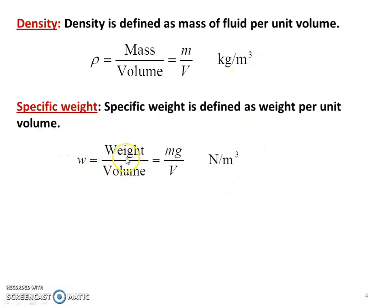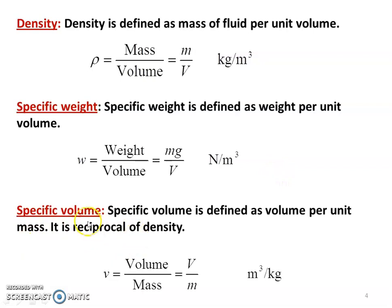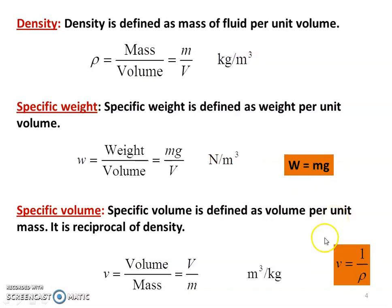Specific weight W is weight divided by volume. Weight equals M × g (mass into acceleration due to gravity), which is in Newton. So specific weight is Newton per meter cube. Specific volume is volume divided by mass: small v = V/M, in meter cube per kilogram. Note that specific volume equals 1 divided by density, and density equals 1 divided by specific volume.